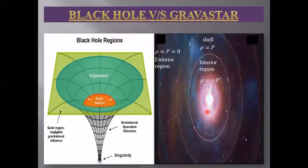The gravastar has three regions: the interior region in which there is dark energy, a shell, and an exterior Schwarzschild vacuum.